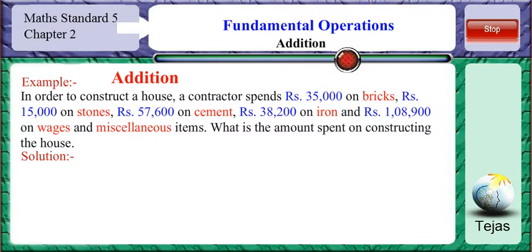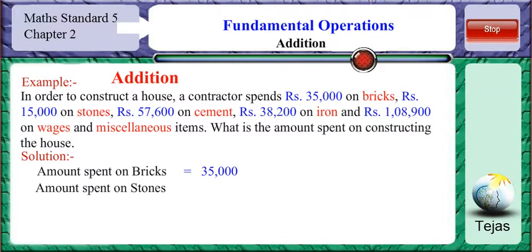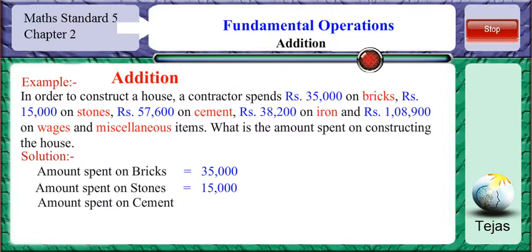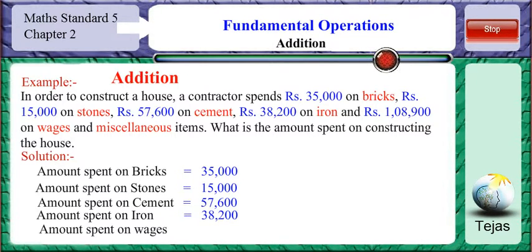As seen in the previous example, let us write down what is given in the problem. The amount spent on bricks is 35,000. Amount spent on stones is 15,000. Amount spent on cement is 57,600. Amount spent on iron is 38,200. Amount spent on wages and other expenses is 1,08,900.